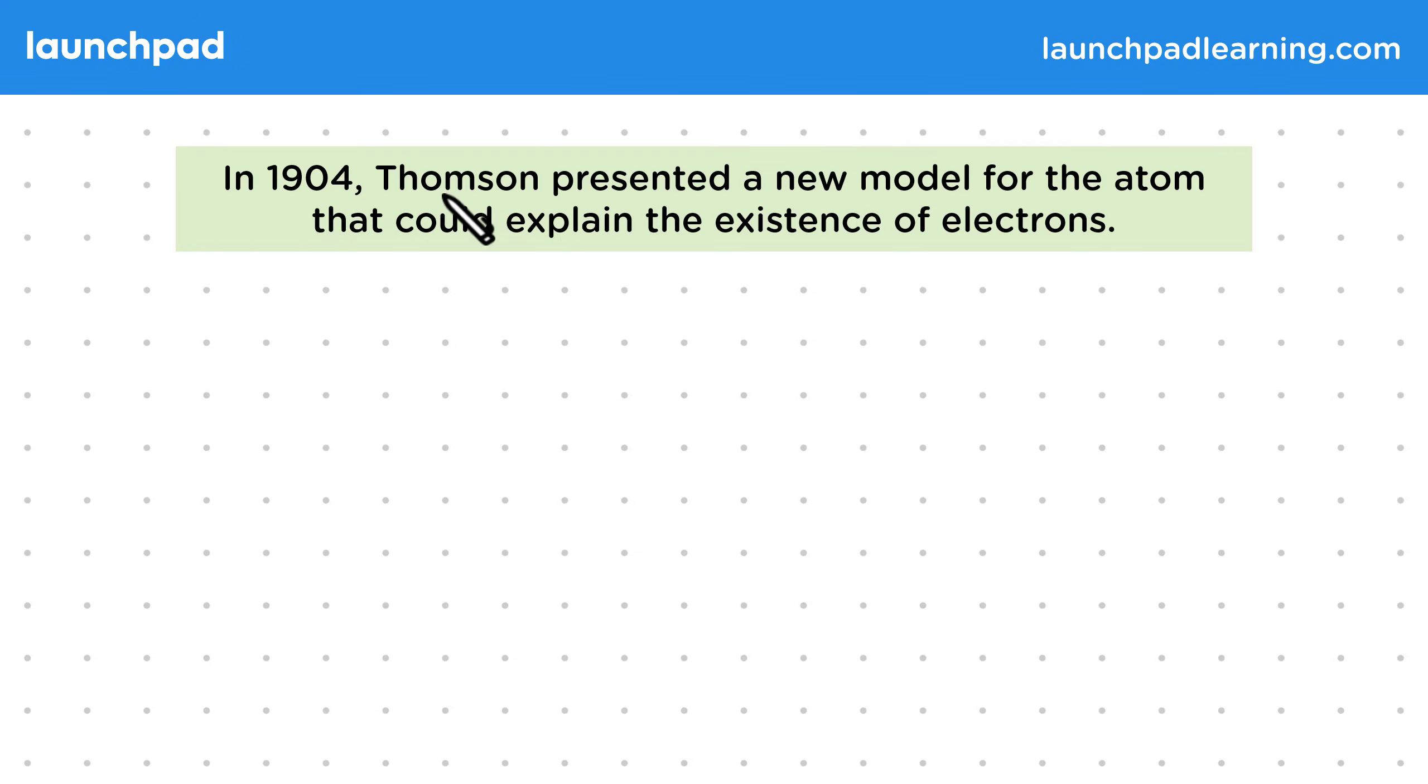In 1904, Thompson presented a new model for the atom that could explain the existence of electrons. When making this model, he didn't know about protons or neutrons. This became known as the plum pudding model.